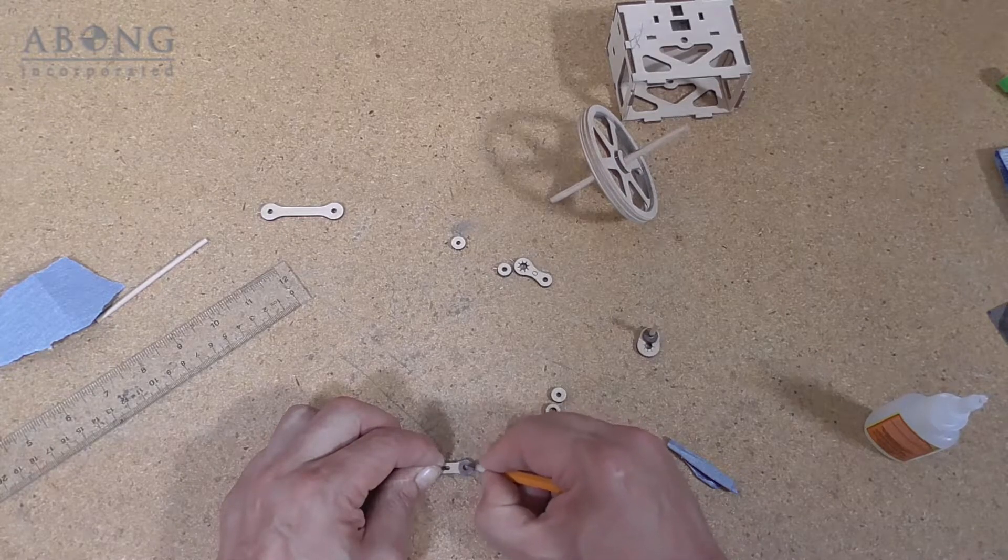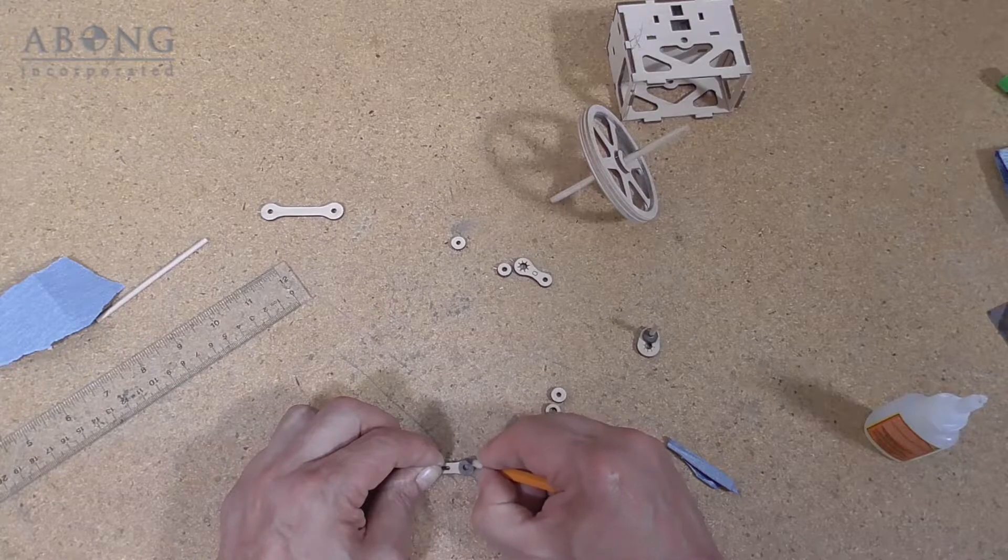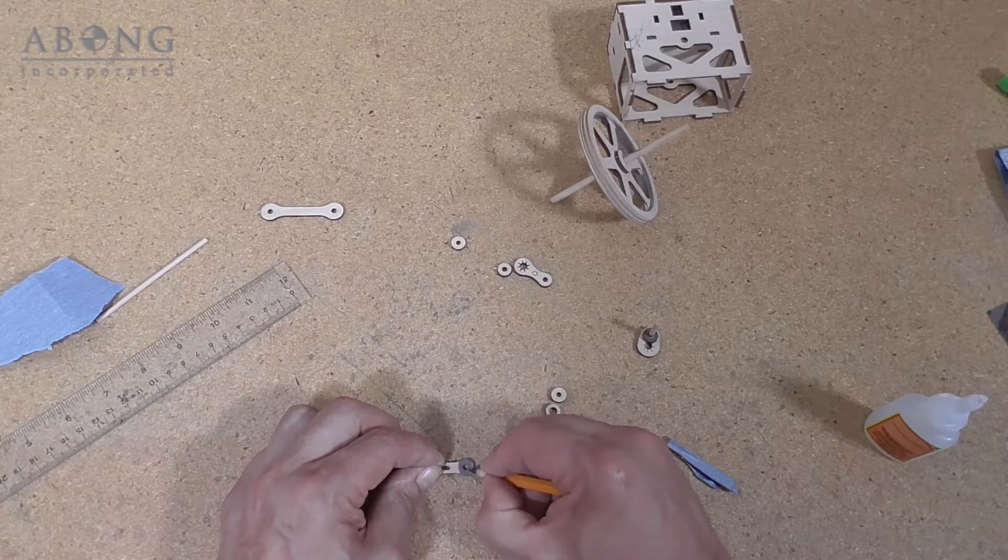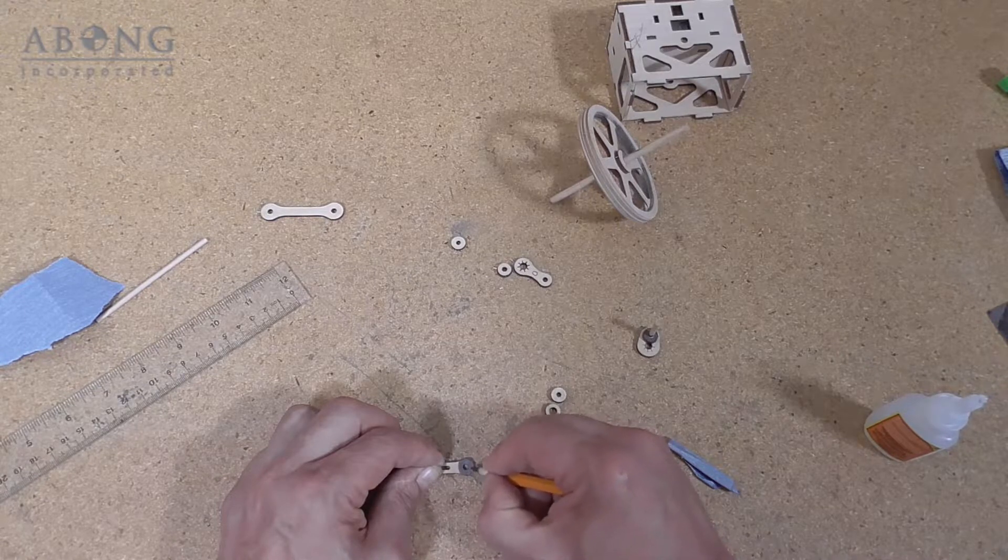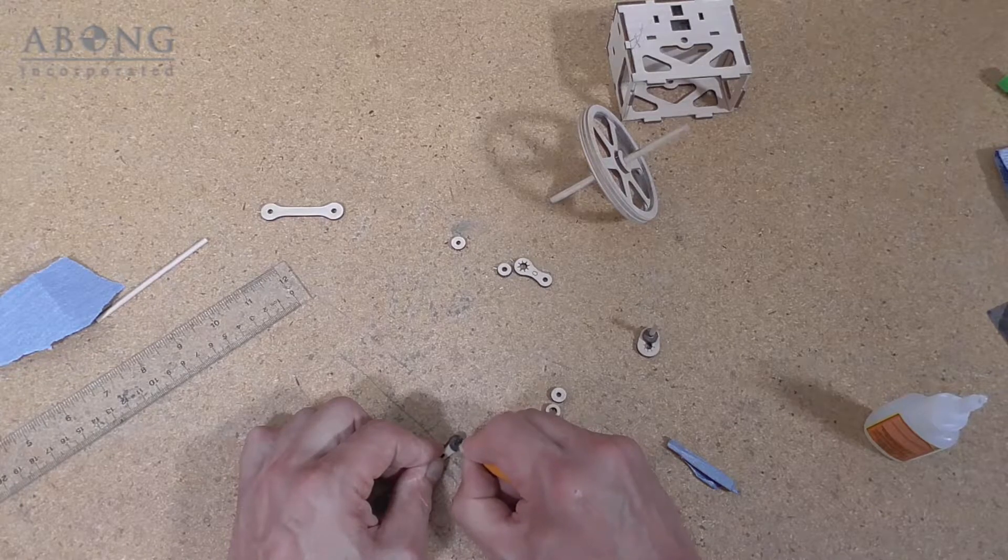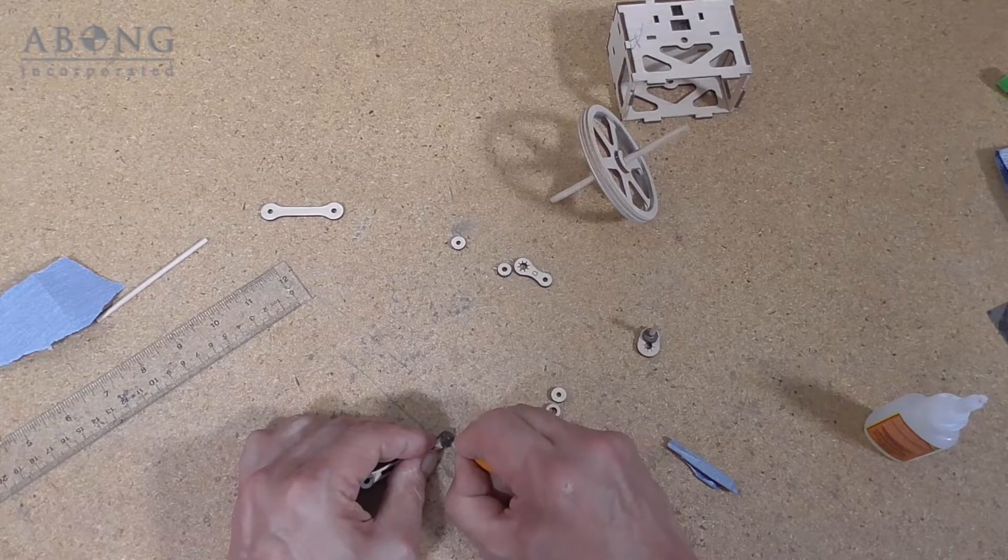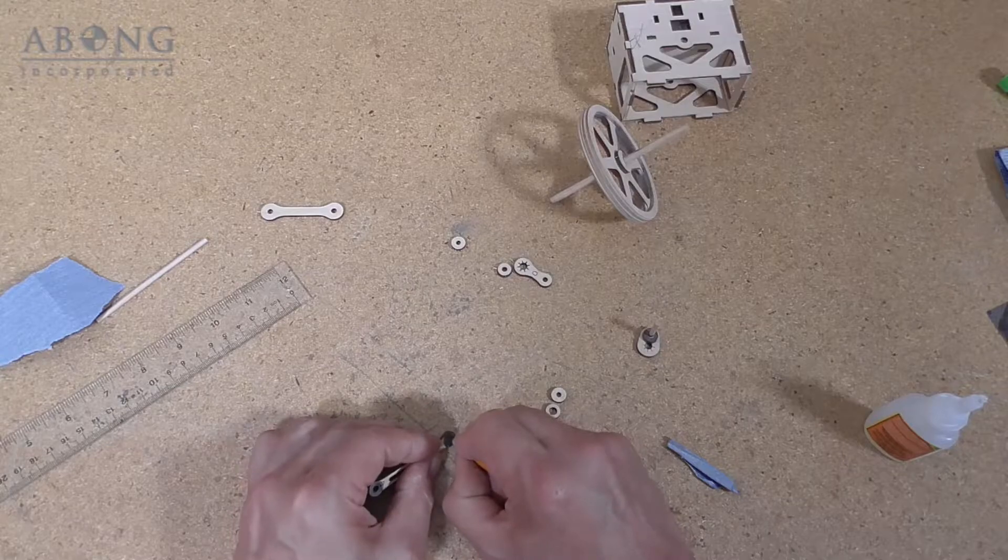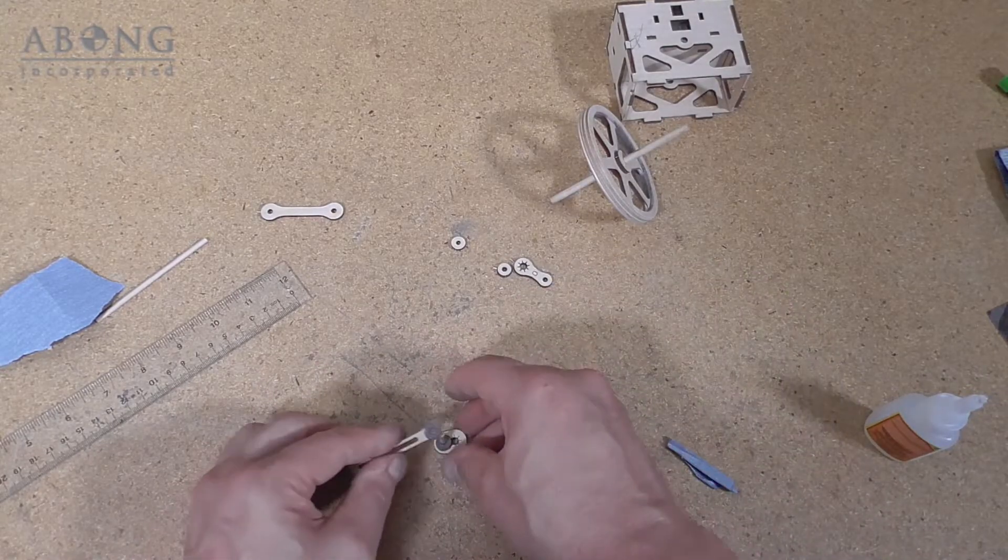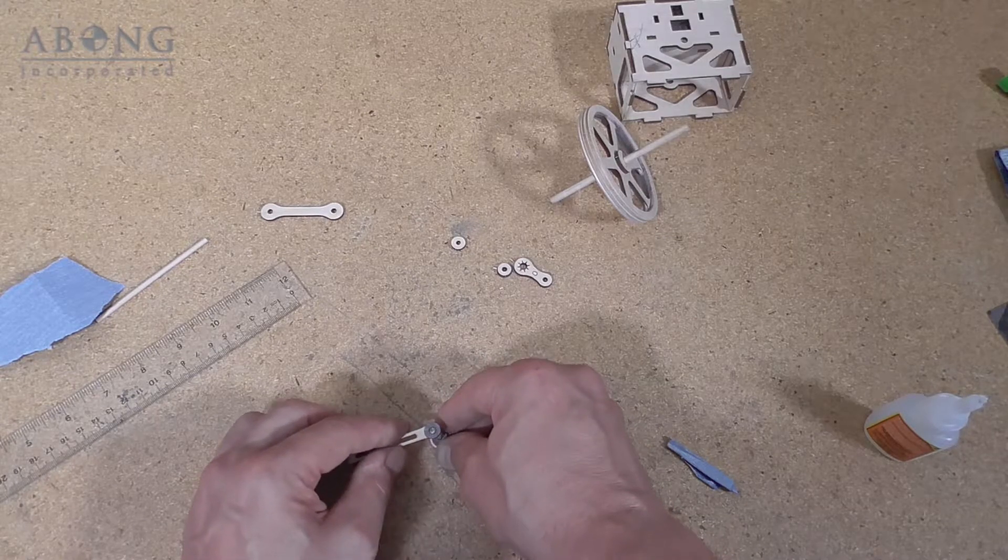This is just making sure that there's as little friction as possible when the engine is actually running. Make sure that there's graphite in the hole. So now we just simply slip this on.